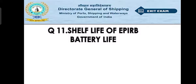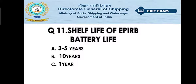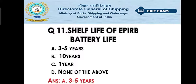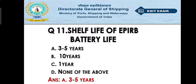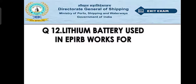Question number eleven: what is the shelf life of the EPIRB battery? Option A: three to five years. Option B: ten years. Option C: one year. Option D: none of the above. The right answer is three to five years. The EPIRB is the Emergency Position Indicating Radio Beacon used in emergencies. The battery life depends on the manufacturer, but on average it is three to five years.